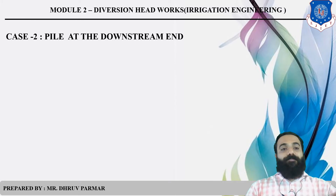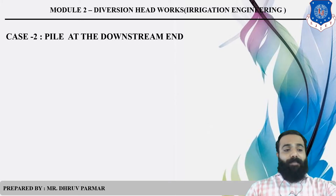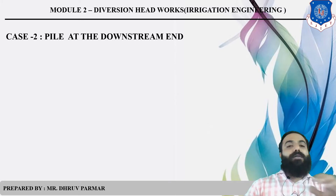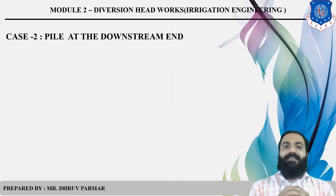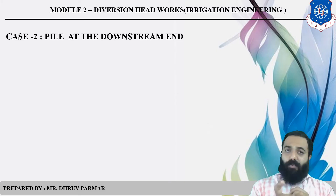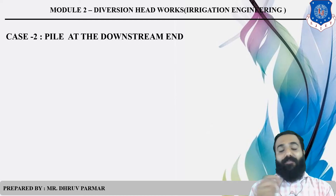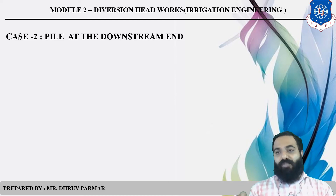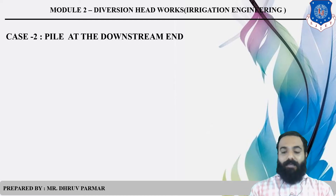The second case is pile at the downstream end — the pile is provided at the downstream side, which is the exit point. Again there are three points: E, D, C.